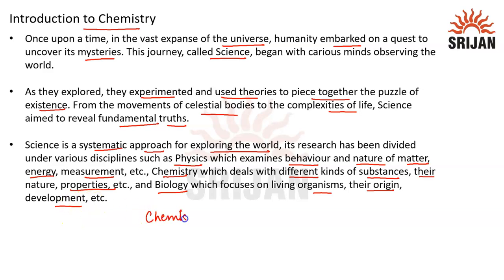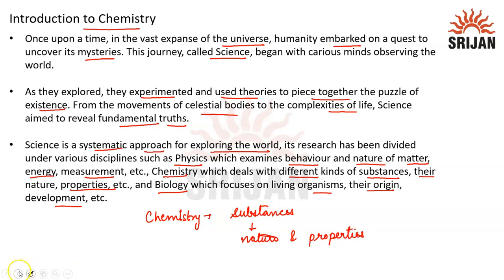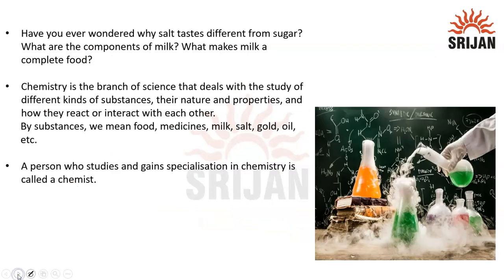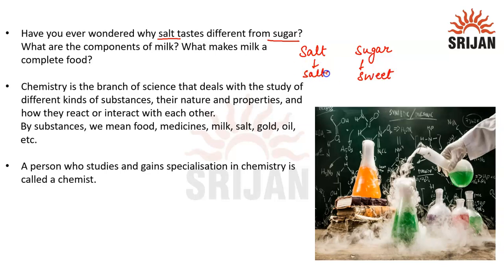In chemistry, we will be learning about different types of substances, their nature, and their properties. Have you ever wondered why salt tastes different from sugar? Salt and sugar are two different types of substances — sugar tastes sweet and salt has a salty taste. Why they taste different, why they behave in this way, that is what we have to understand.